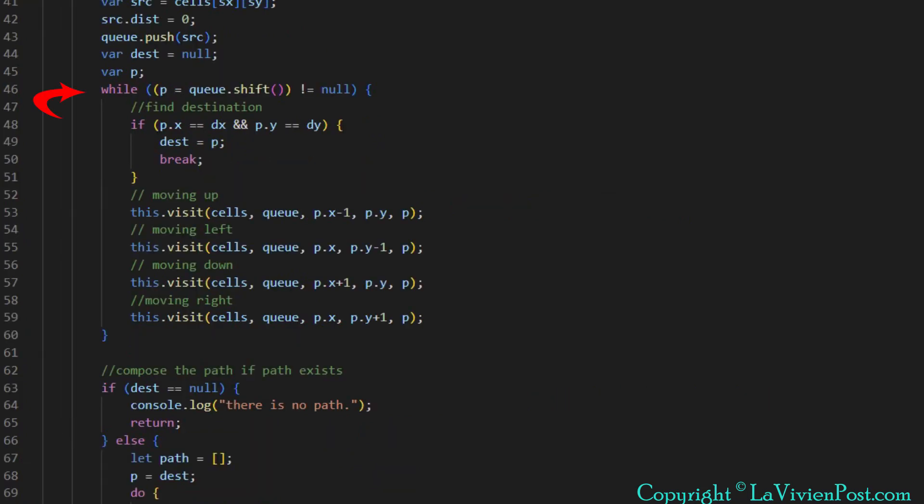Inside the while loop, dequeue node from the queue. If the node is destination, we can exit from the loop. Otherwise, visit each four adjacent cells by calling visit function.